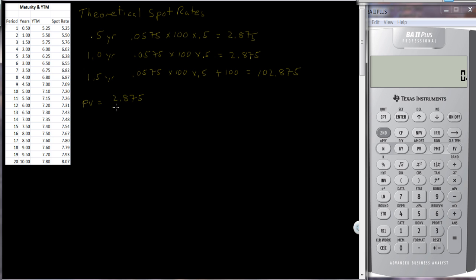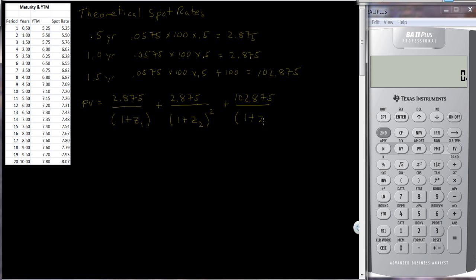The present value equation is: $2.875 divided by (1 + z1), where z1 is the first theoretical spot rate, plus $2.875 divided by (1 + z2) squared — that's the spot rate for the second cash flow — plus the final cash flow of $102.875 discounted by (1 + z3) to the third power. Each one of these cash flows is discounted by its own interest rate.